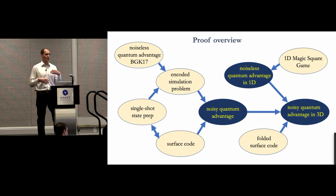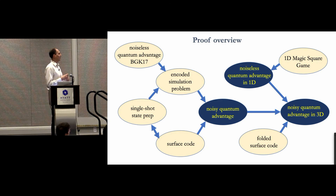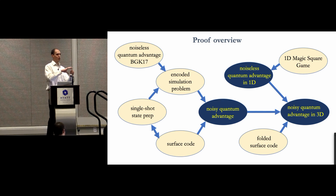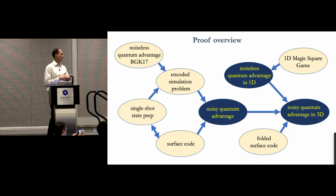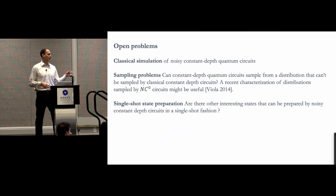To establish quantum advantage in three-dimensional geometry, we need one extra ingredient: a distributed version of Magic Square Games, which gives us noiseless quantum advantage in one-dimensional geometry. Then we encode each qubit by a two-dimensional surface code and obtain noisy quantum advantage in 3D. This is easier said than done, but I won't go into details. I conclude with some open problems — thank you for your attention.